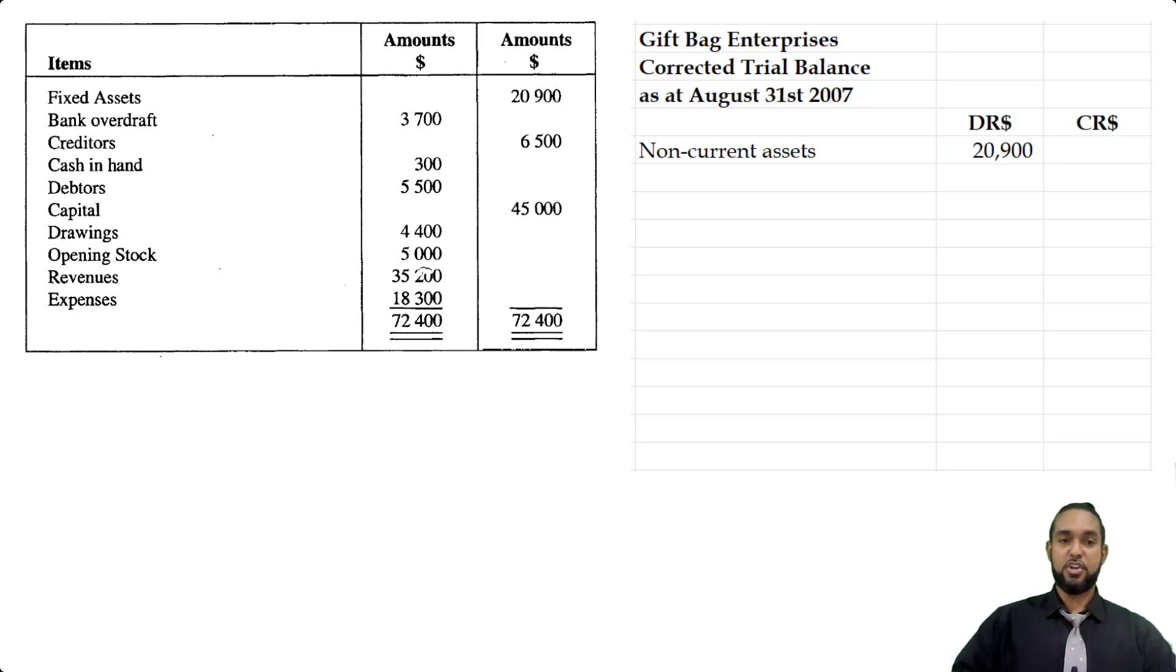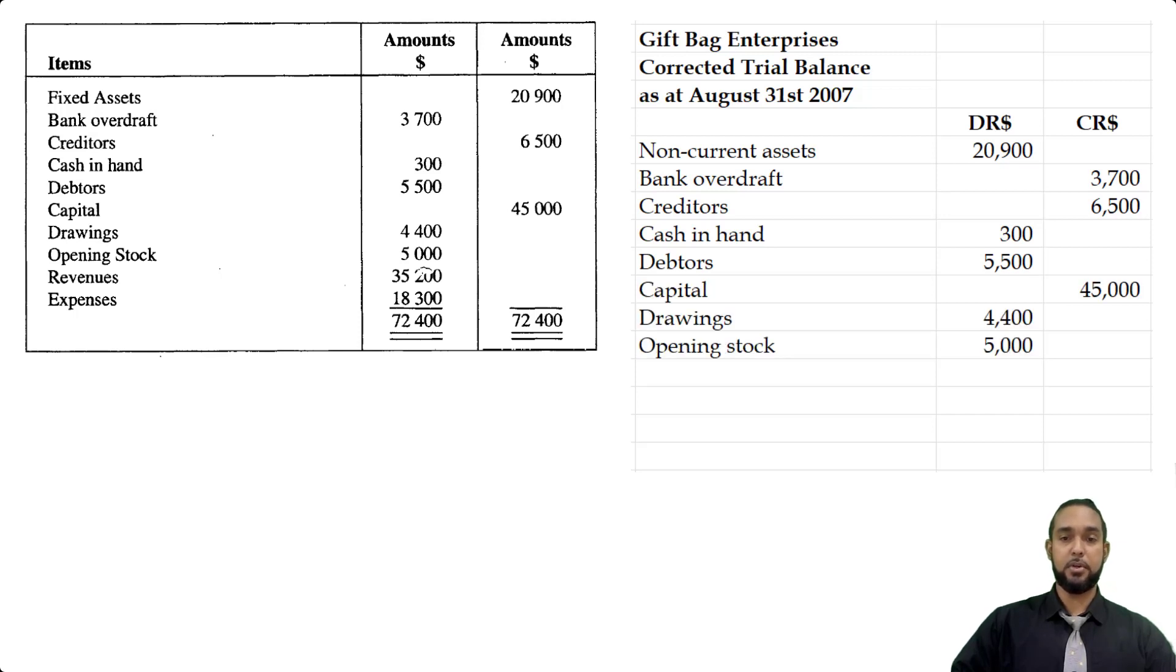Okay next, the bank overdraft belongs in the credit column because it's a liability. Creditors was in the correct column as with cash in hand, debtors, capital, drawings, opening stock.